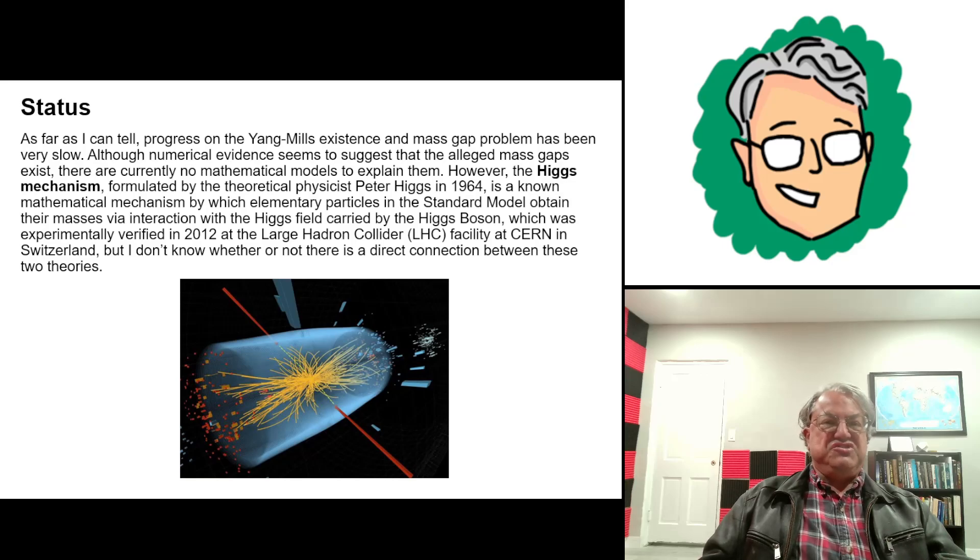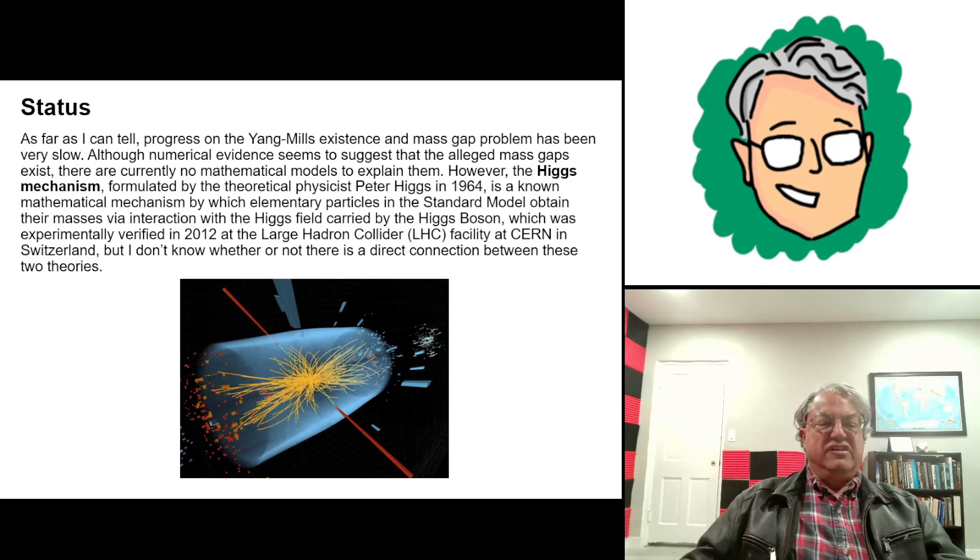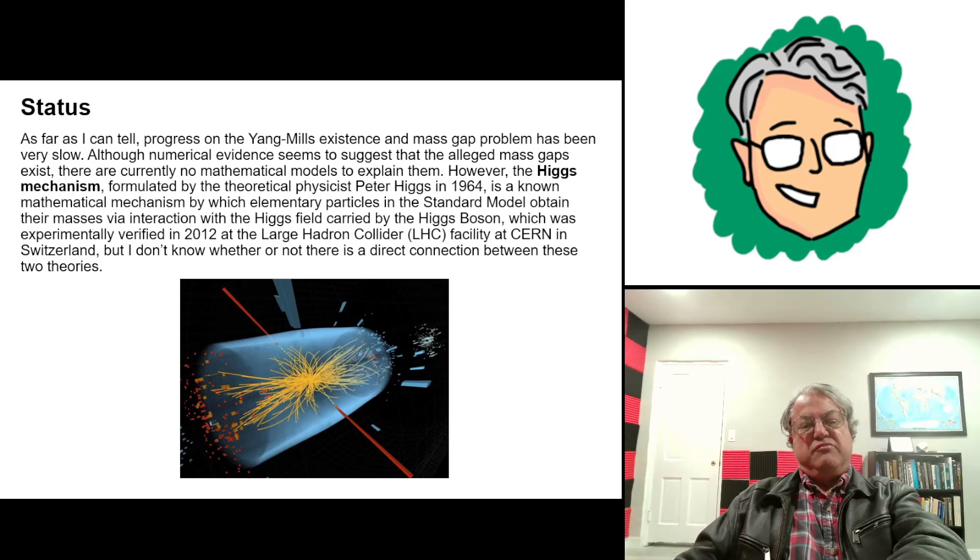So I don't know if there's a connection or not, but we do know the mechanism, the Higgs mechanism, by which elementary particles get their mass. So I don't know if there's a connection between this and the Yang-Mills existence and mass gap problem. That problem is looking for a theoretical understanding of this mass gap and the Yang-Mills theory. And maybe there's a connection. I don't know. Maybe some of you guys can tell me. But like I said, I'm burned out on this problem.